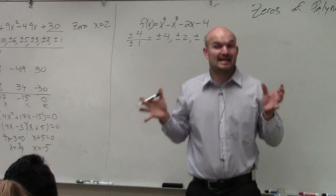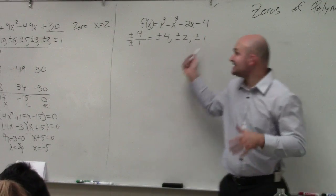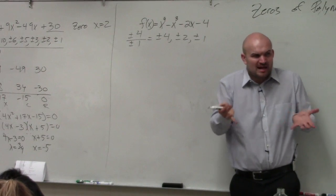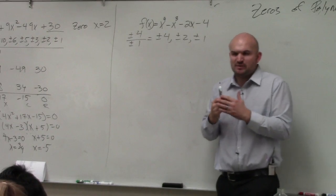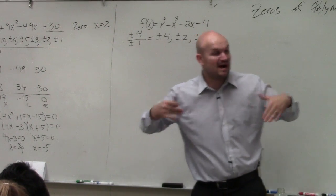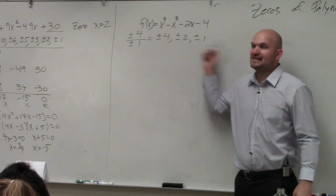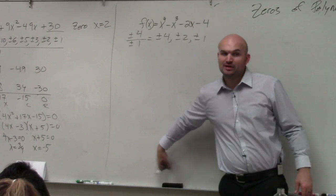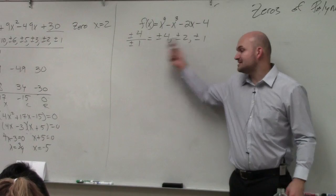That means my real rational answers, whatever they are, has to be in this list. And that's really all the rational zero test is telling us. It's just telling us what the possible, or what our rational zeros will be, our possible rational zeros. This doesn't tell us what the answers are. It's just saying whatever real rational answers we have is going to come from that list.